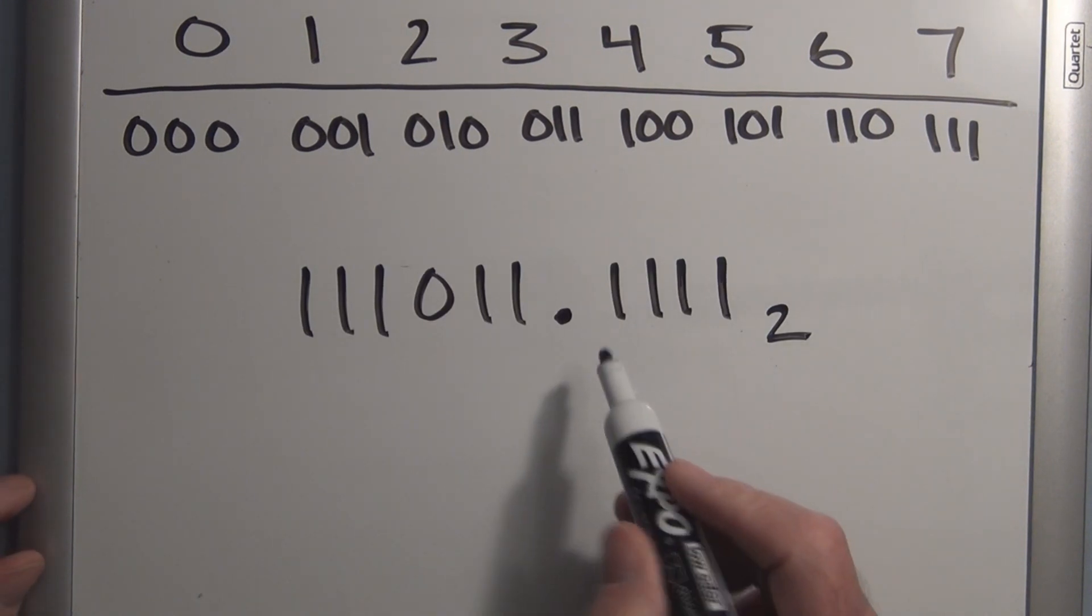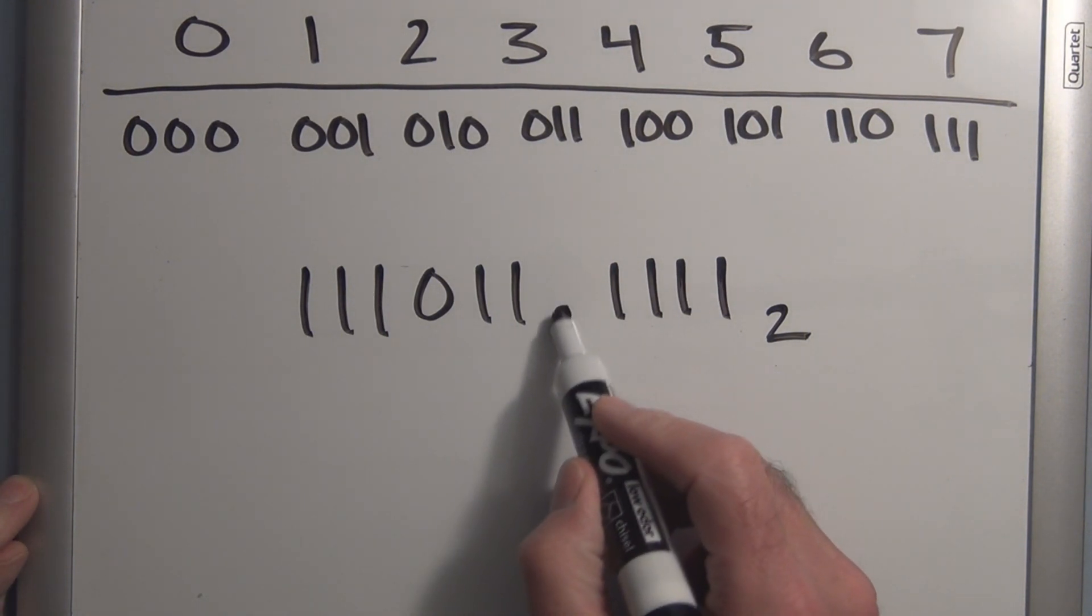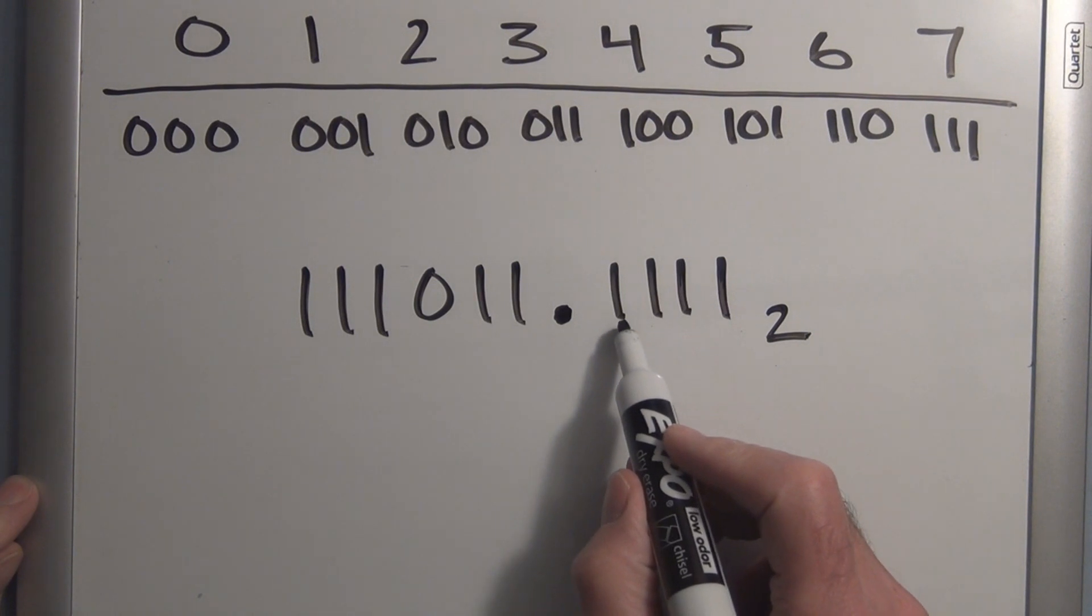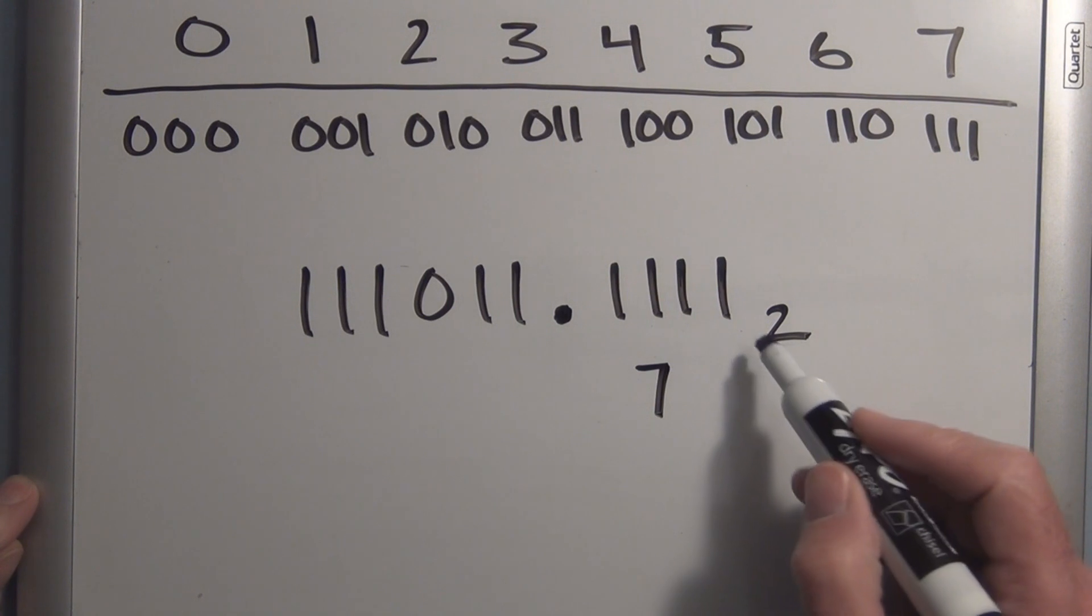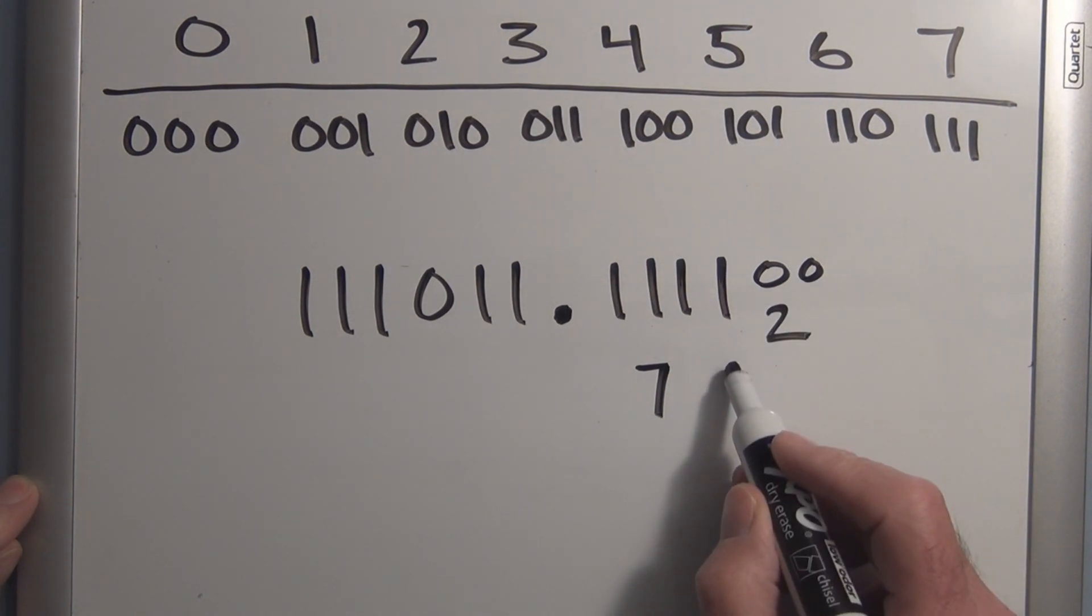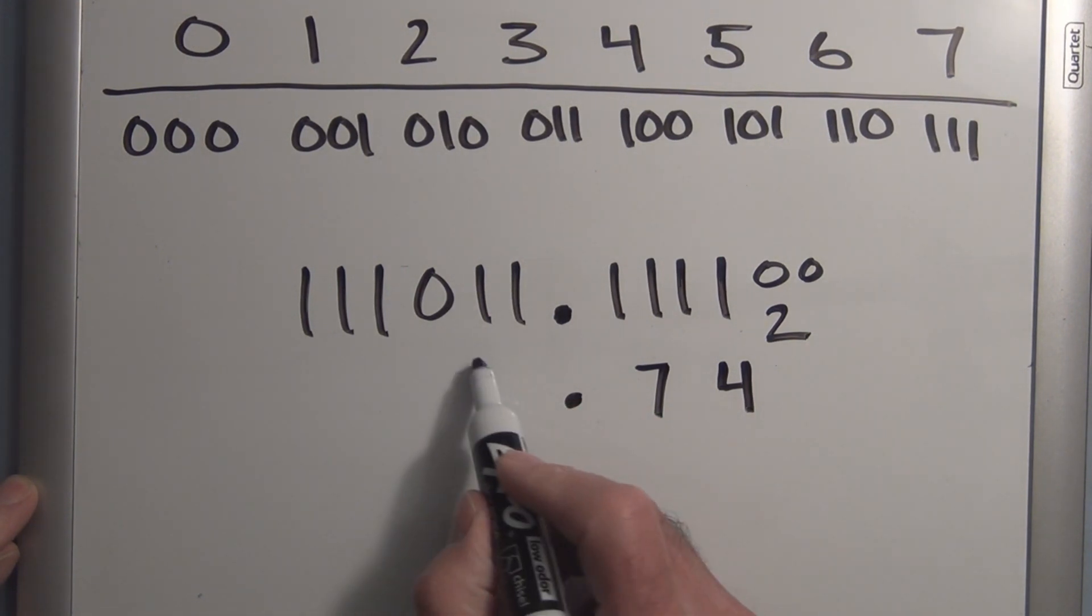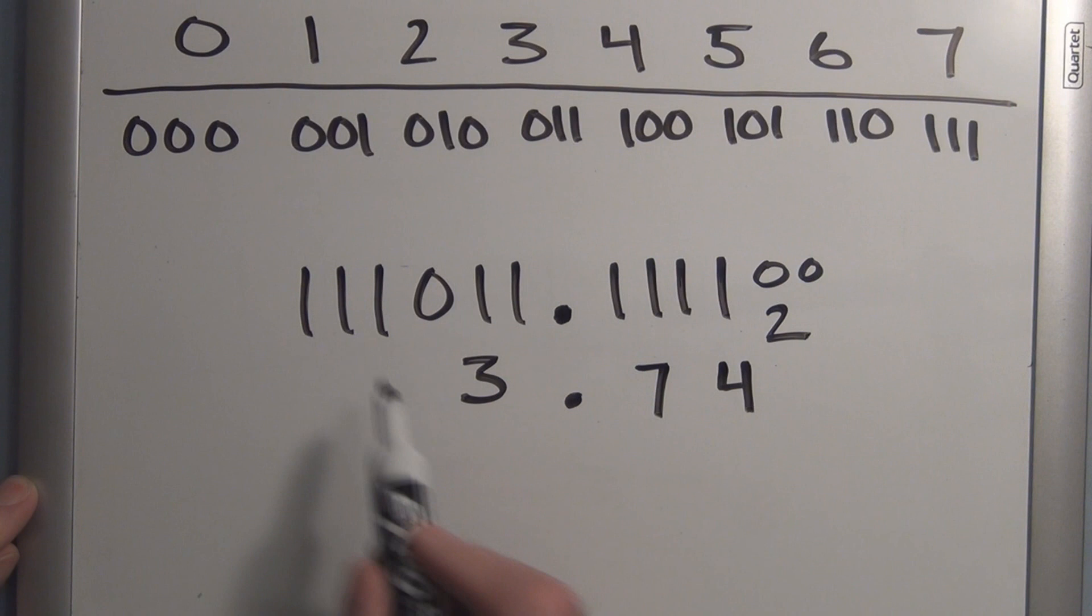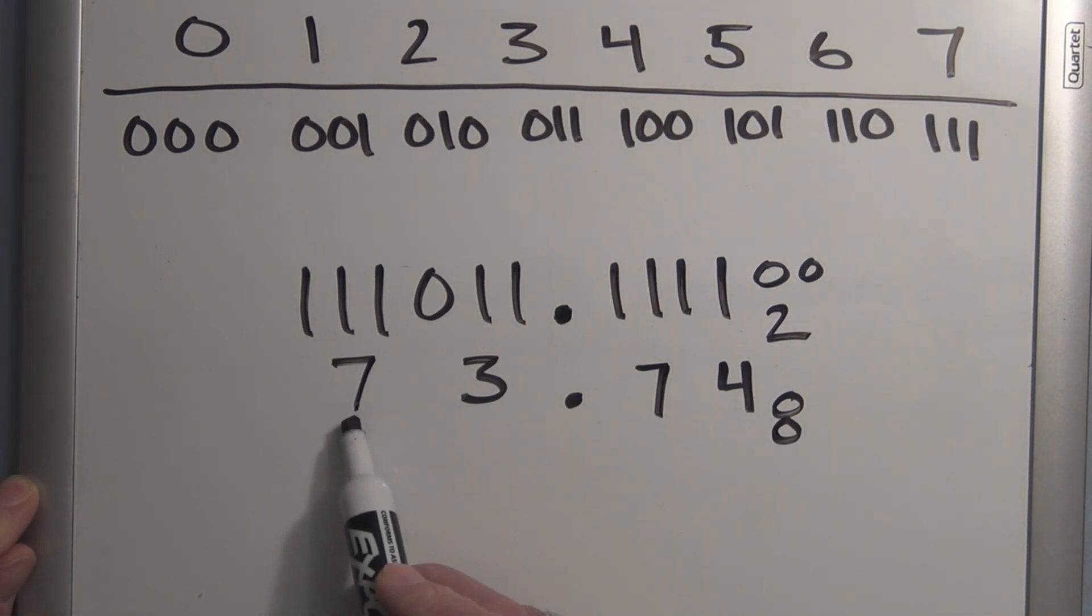If we wanted to convert this binary number to octal, again, we take groups of 3 with respect to the binary point. So we have 1, 2, 3. This is 7. And here we have to add 2 zeros. So this is 4. And then going in this direction, this is 3. And here we have 7. So this is the equivalent octal number here. It's 73.74.